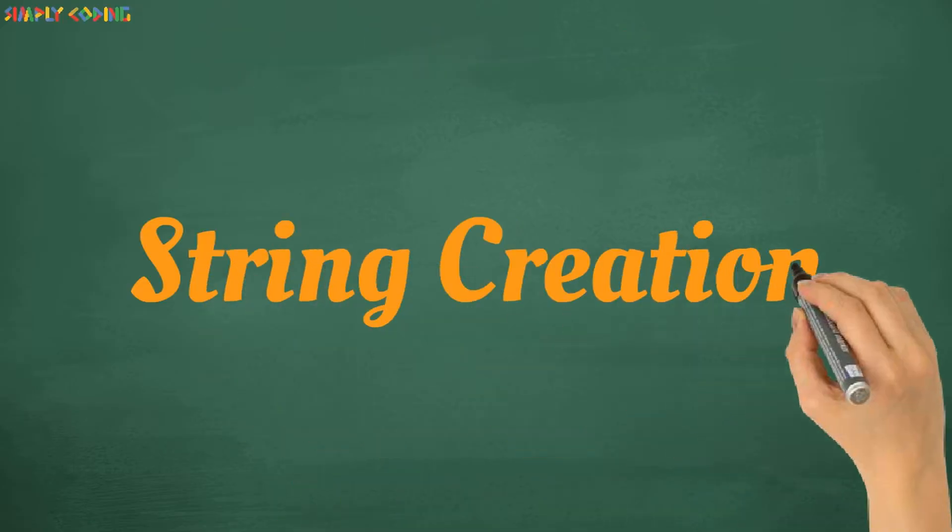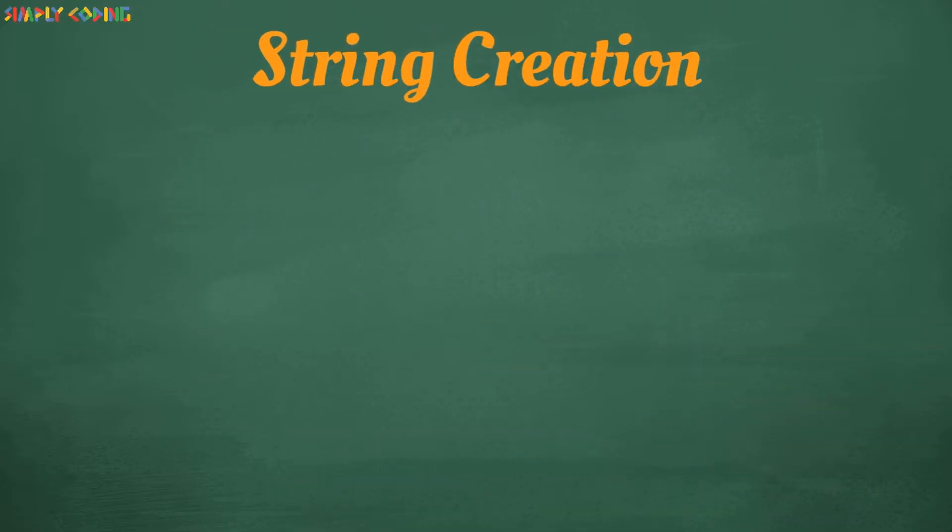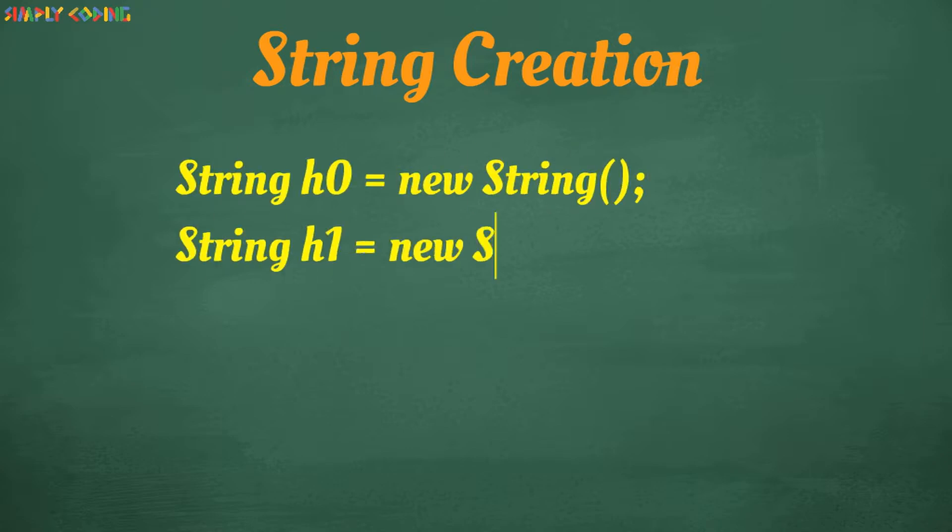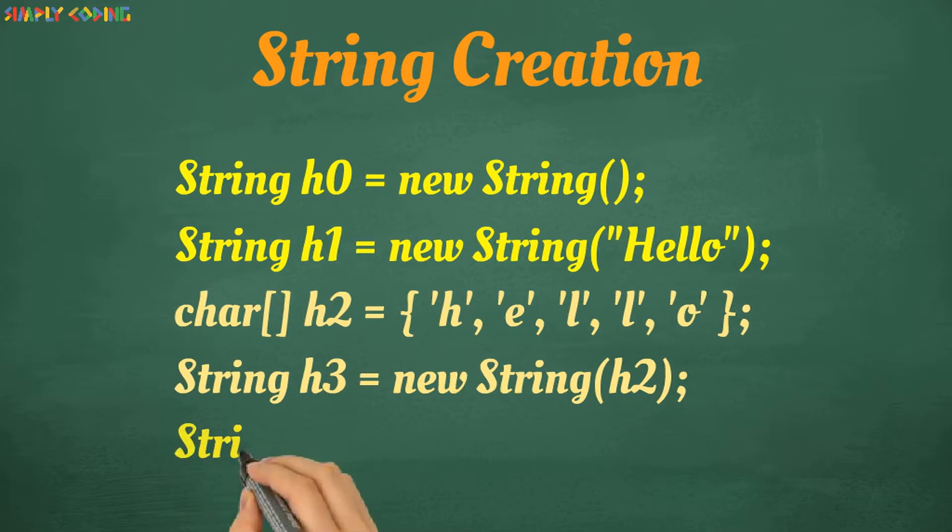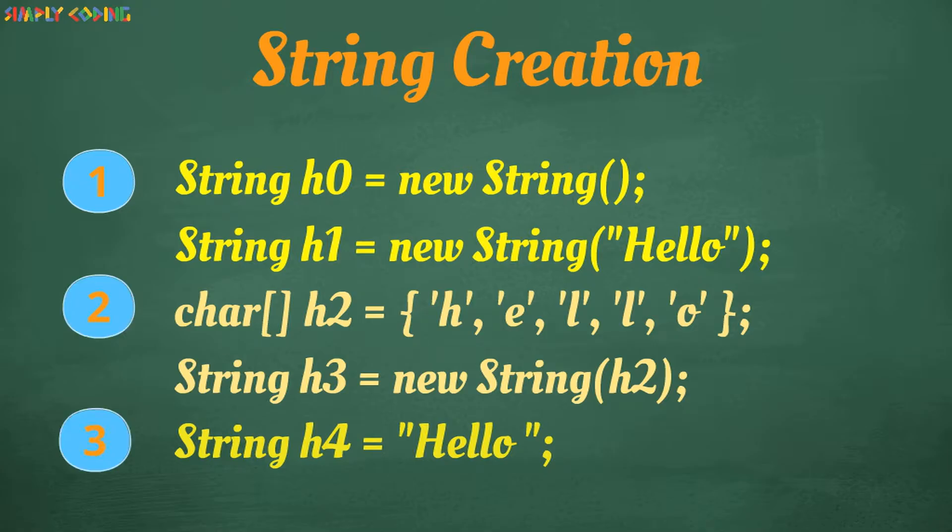First, we will see how to create a String object. You can use a constructor to create an empty string, or use a constructor that initializes it directly with a value. If you have a char array, you can also pass it to the String constructor. Alternatively, you can assign a value directly. Any of these methods can be utilized in your program.